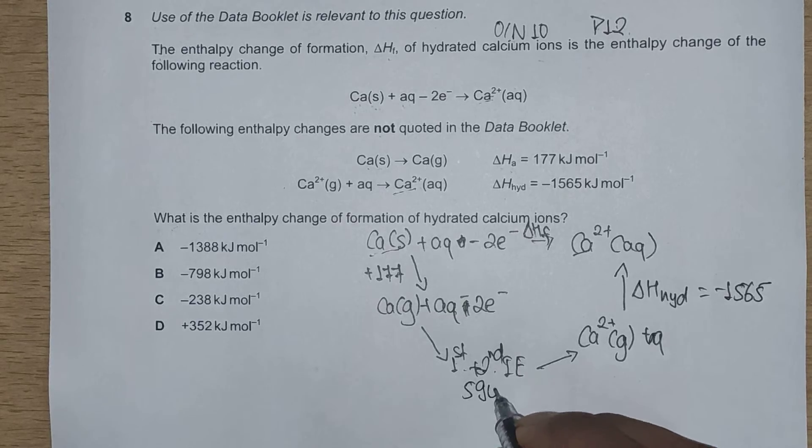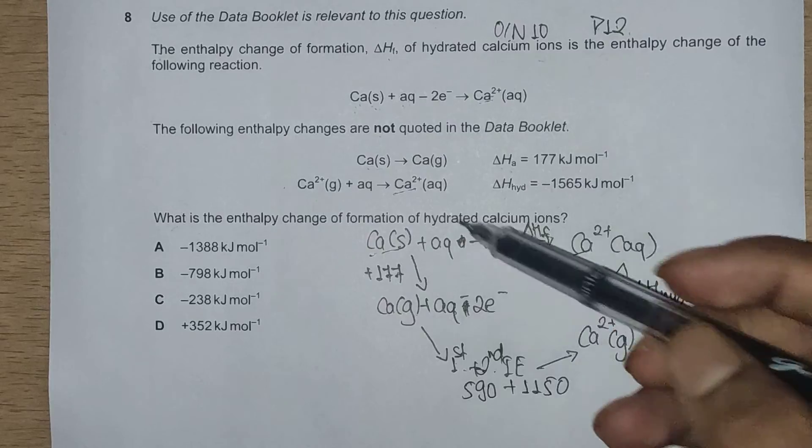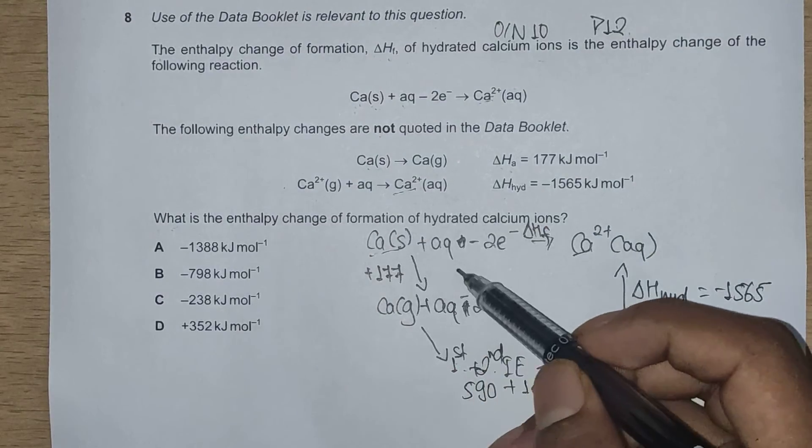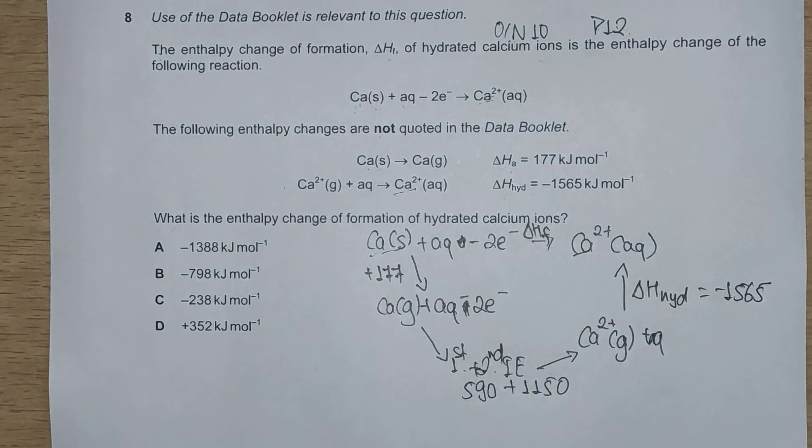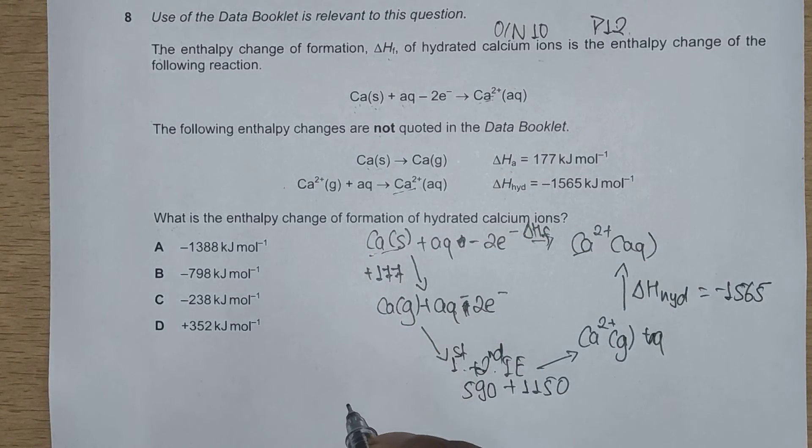This is minus 1565 from the Data Booklet. These two values are 590 plus 1150. Now according to the vector law of addition and vector displacement law, we'll follow the arrows from this side